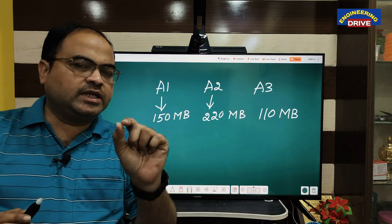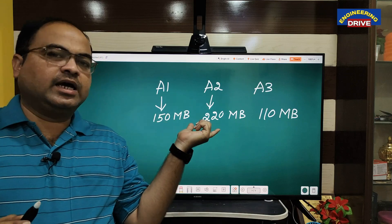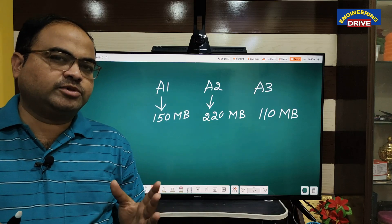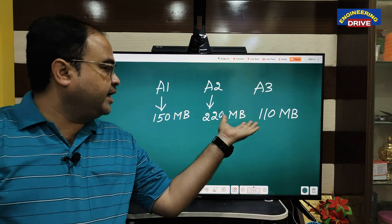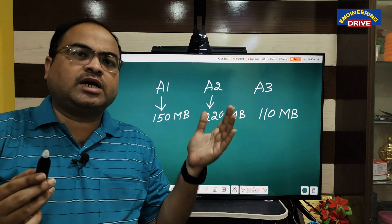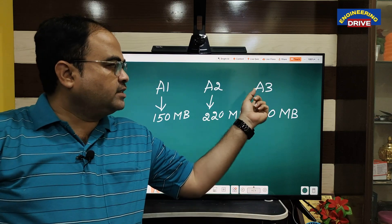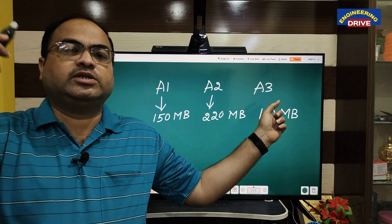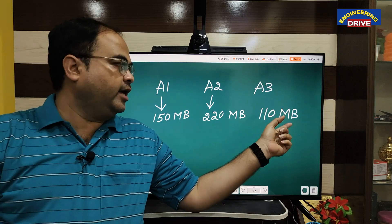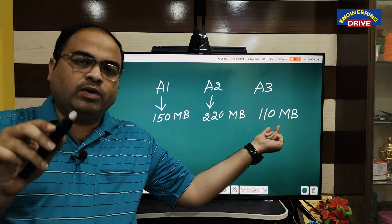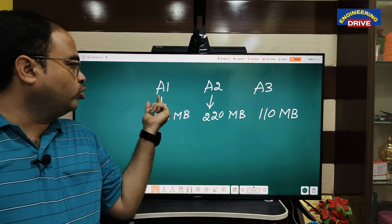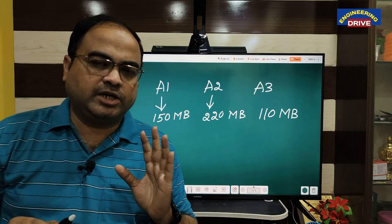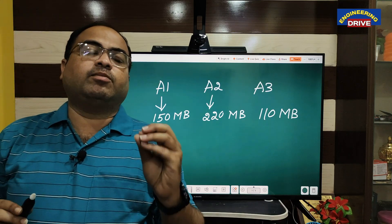All three algorithms are solving the same problem and providing the same solution, but what is the difference? When I look at space complexity, the space taken by the three algorithms is different in size. Algorithm A3, designed by developer 3, is taking less memory — only 110 MB — compared to A1 and A2.